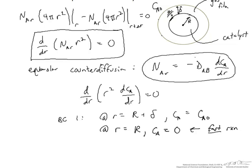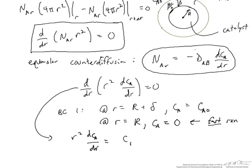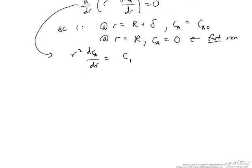Now we can integrate our second order differential equation with these two boundary conditions to solve for how the concentration of A varies with position. If we integrate once we get that r² dCA/dr is equal to an integration constant, which we'll solve for in just a minute with the boundary conditions. We can then divide through both sides of this equation by r², and then integrate this first order differential equation, and that brings in a second integration constant, C2.